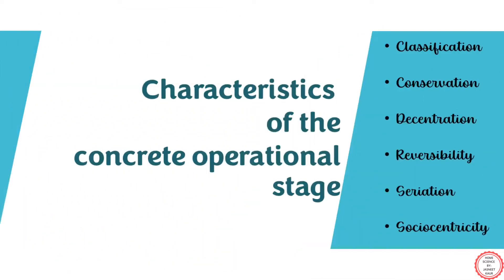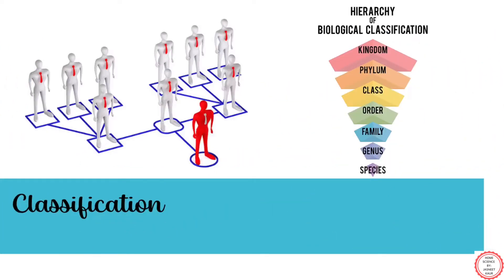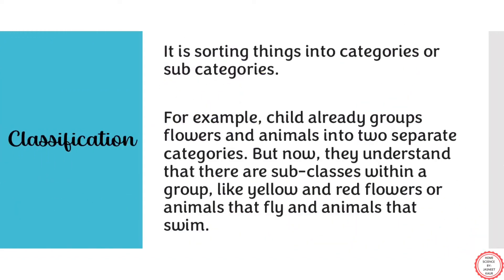This stage is between 7 to 11 years of age, and this span is known as middle childhood. Now, talking about various characteristics of this stage. Just as we studied different characteristics of the pre-operational stage and the sensory motor stage, we will understand the basic characteristics of the concrete operational stage in the next slides. Starting with classification — classification is about studying a child's ability to classify objects and put them together on the basis of their color, shape, size, etc.